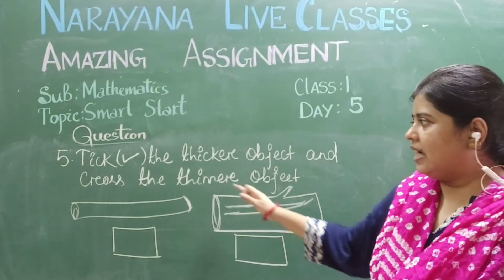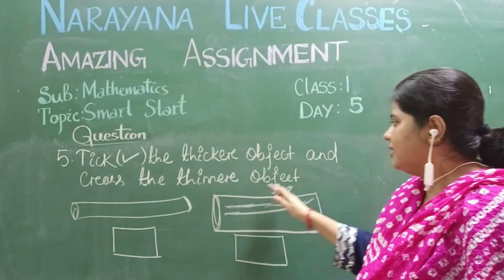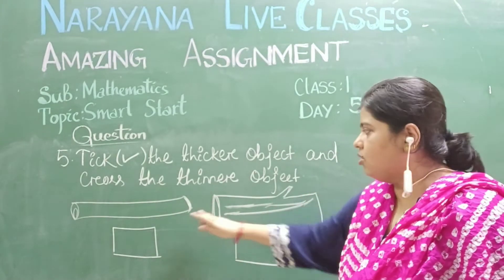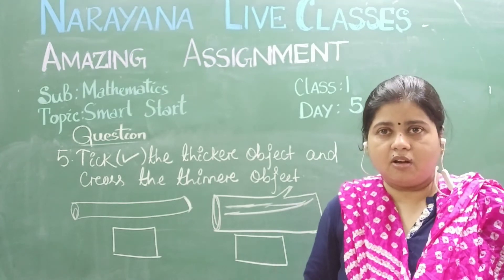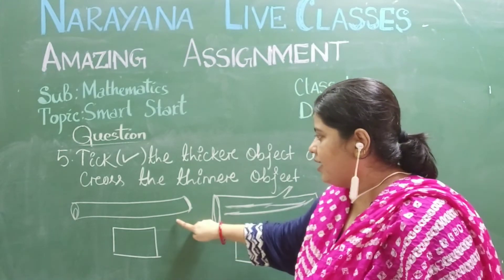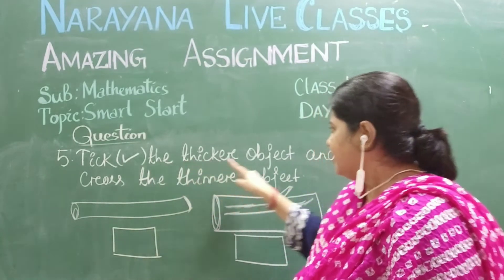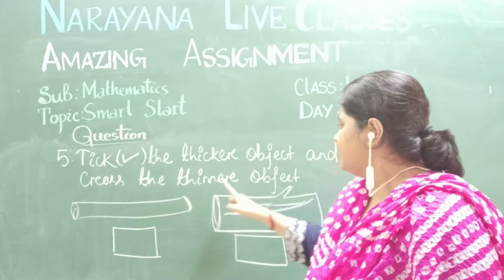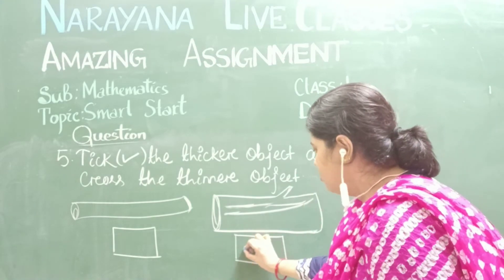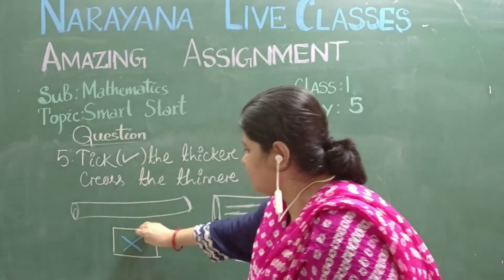The fifth question from the assignment sheet: take the thicker object and cross the thinner object. You can see two wooden logs — the trunk of a tree when cut forms a log of wood. There is one thin log and one thick log. Take the thicker log and cross out the thinner log. So I take the thick one and cross out the thin one.